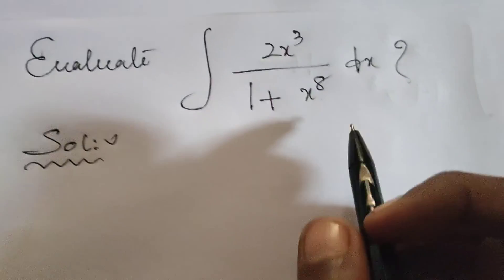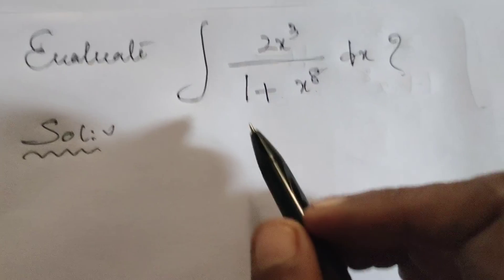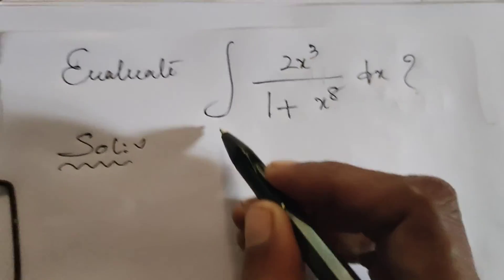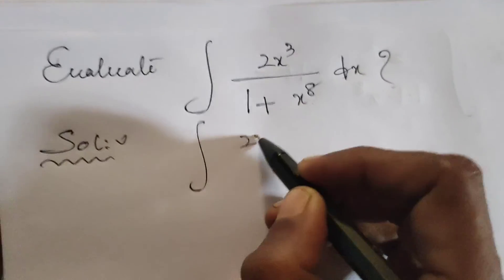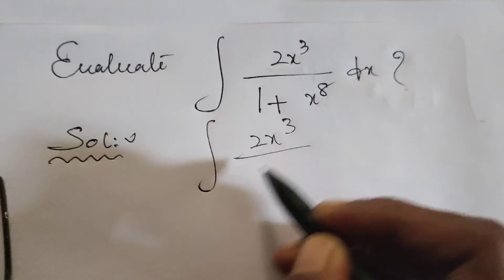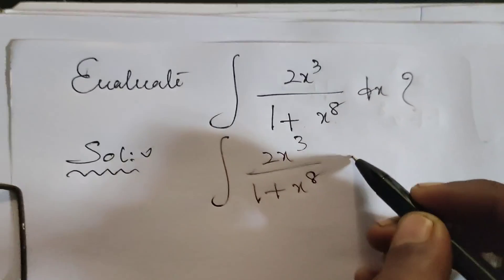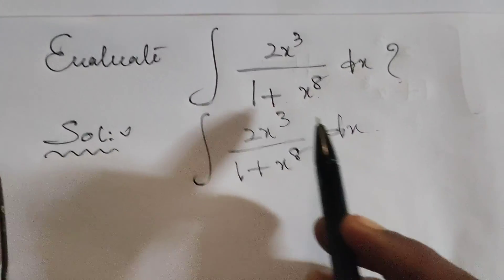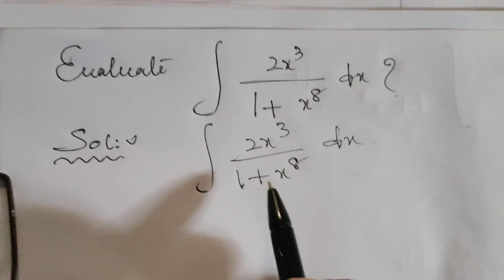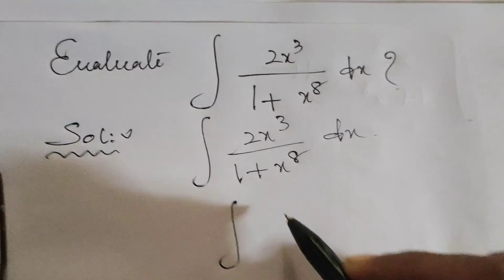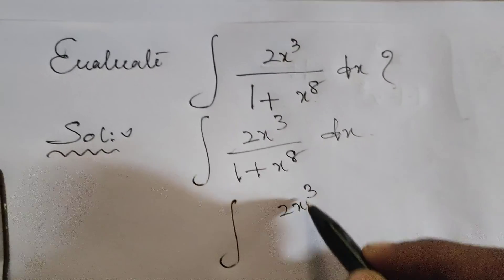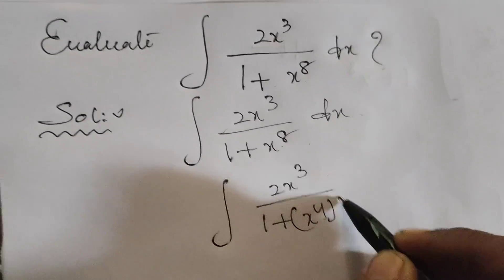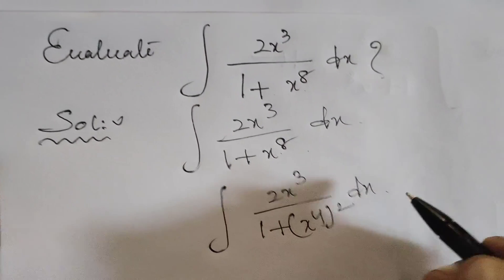In this problem, we will use the substitution method. First of all, write once again the given problem: integral of 2x cubed by 1 plus x to the power 8 dx. Then, we can rewrite x to the power 8 as x to the power 4, whole square, dx.